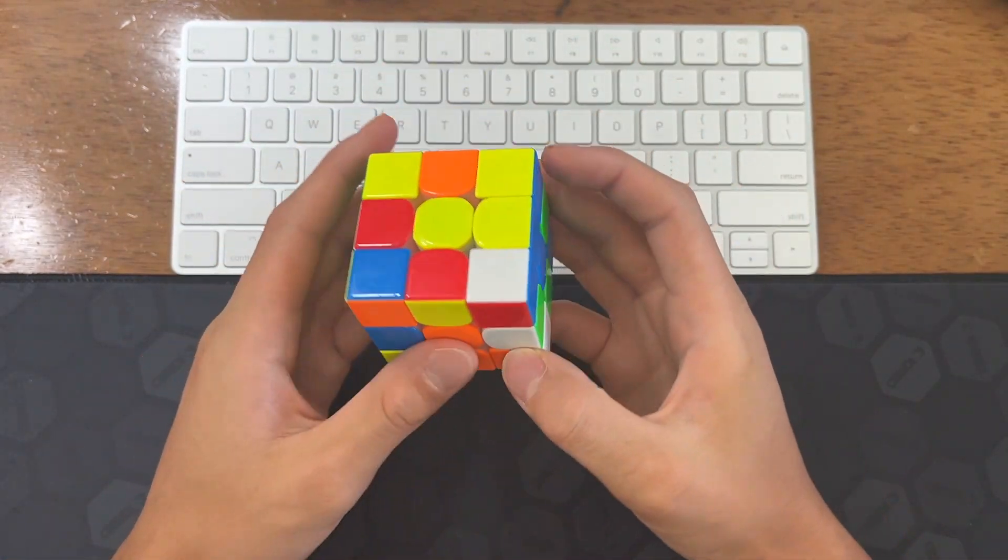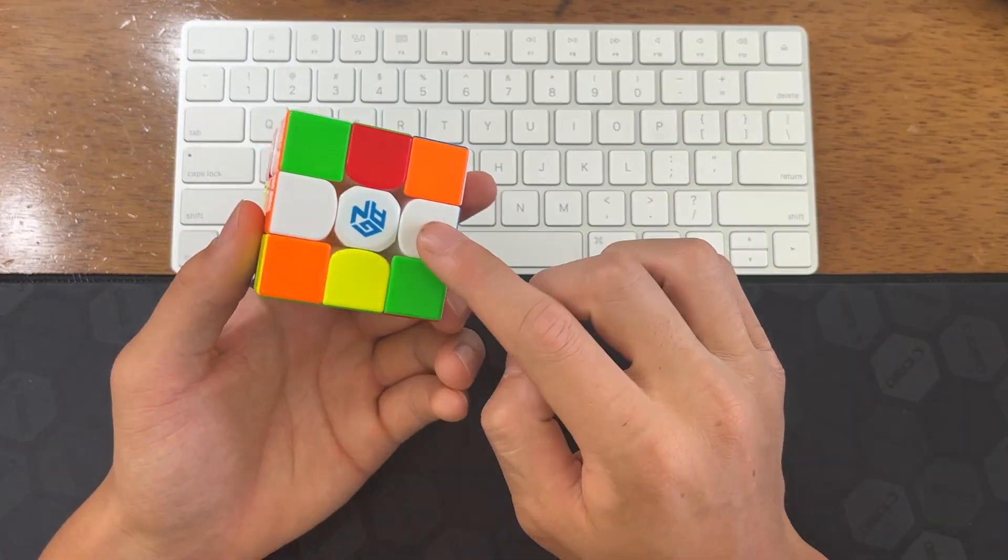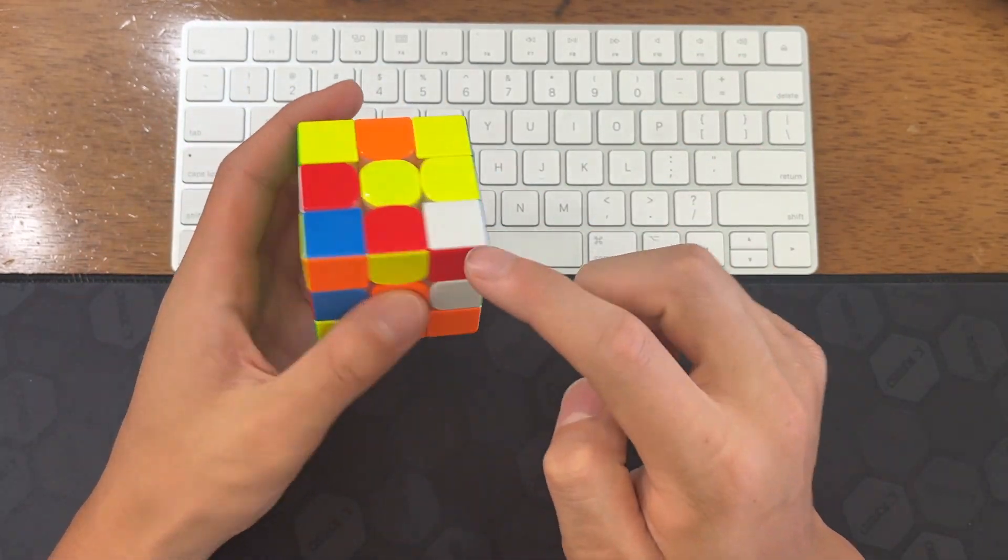First of all, just look for the cross pieces first. This one is already attached, and you have this, this, and this.